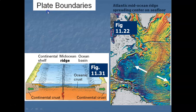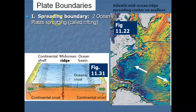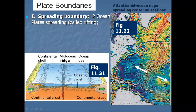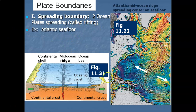Now let's go over some plate boundaries and how we create relief on earth — high points and low points. I'll cover two scenarios: spreading boundaries and converging boundaries. For the first one — spreading boundaries — I'll give one big example of two ocean plates spreading apart. This is like the leading edge in a block diagram of two ocean plates spreading.